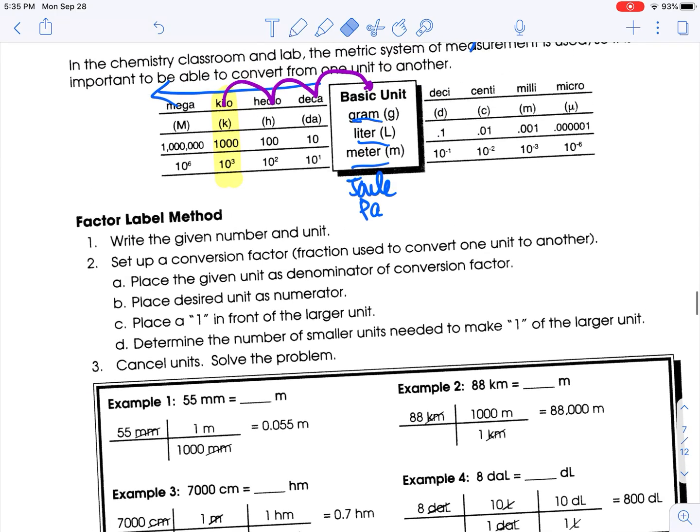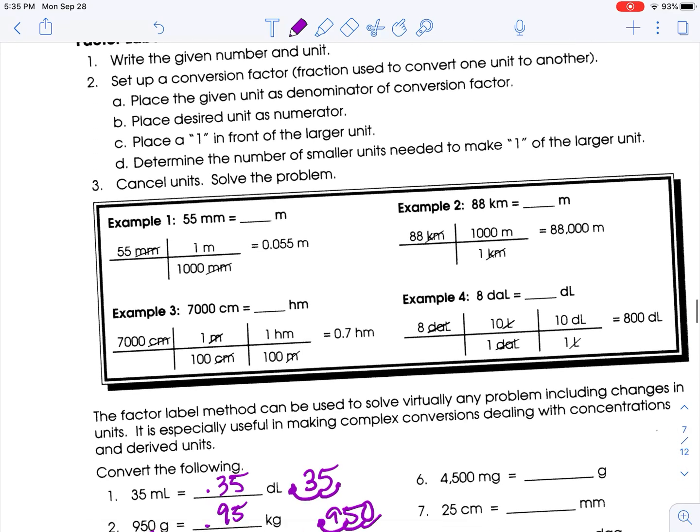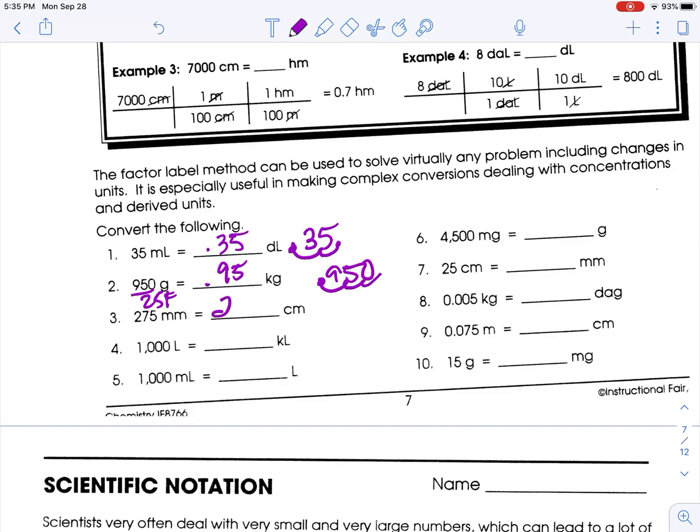Millimeters to centimeters. Let's get rid of that. Millimeters to centimeters. So millimeters to centimeters is one spot to the left. So that would be 27.5.